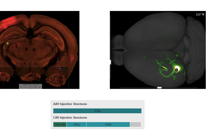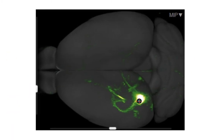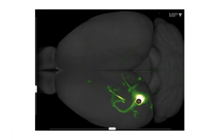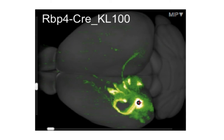To give you a sense of the difference this makes, this first image shows the neuronal projections of cells that project to the structures that we injected into. Contrast this image, which shows the projections defined from the same injection site, but using an RBP4 Cre line, which is enriched in cortical layer 5 cells.